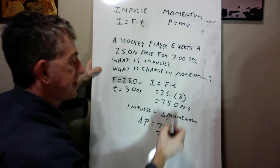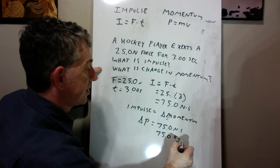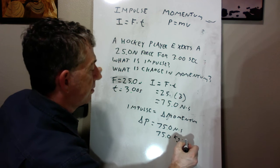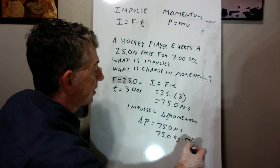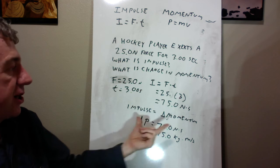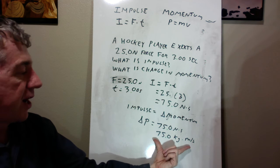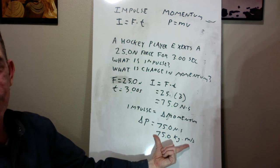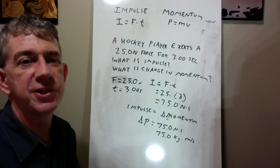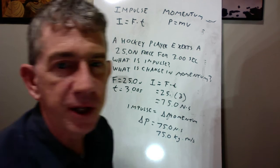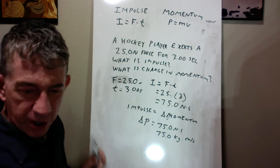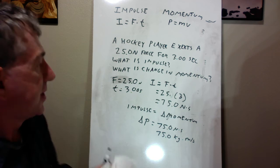is 75 Newton seconds, or 75, remember, mass times velocity, masses in kilograms, and velocities in meters per second. So you could express it either one of those ways. If I asked you to calculate the change in momentum, and you got that it was 75, and they wanted to know what was the impulse, the answer would be 75. It's that simple. The impulse equals the change in momentum.